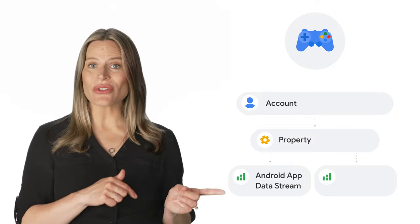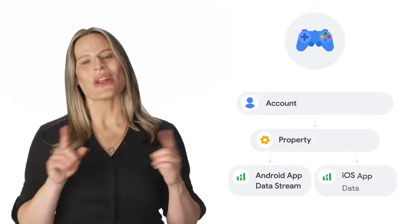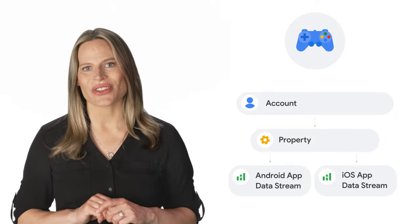The next business is a gaming company that created a mobile racing game for both Android and iOS. Their account structure would look something like this: one account, one property for the app, and two app data streams — one for the Android version and one for the iOS version.